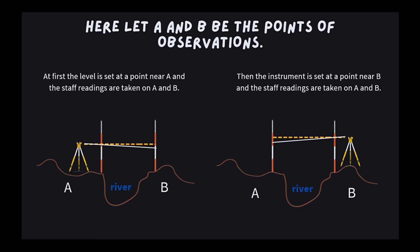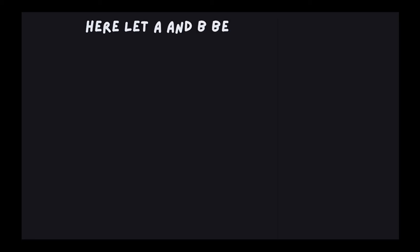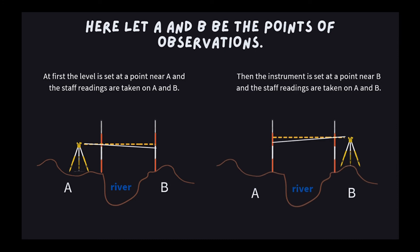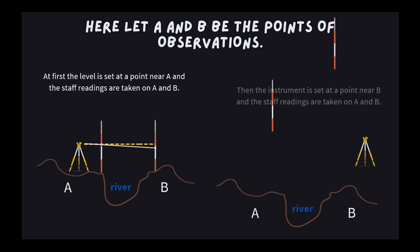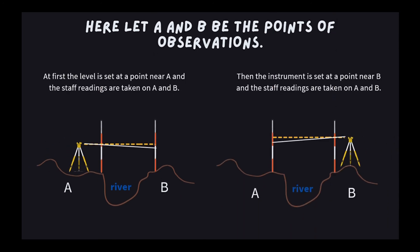To further understand, here is an illustration. Let A and B be the points of observation. The level is first set at a point near A, and staff readings are taken on both A and B. Then the instrument is set at a point near B, and staff readings are taken again on both A and B.